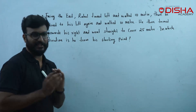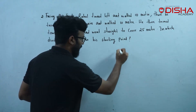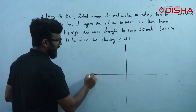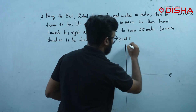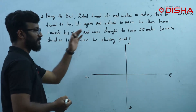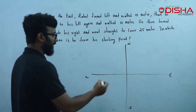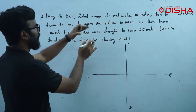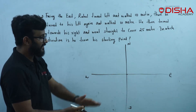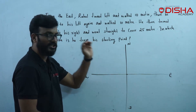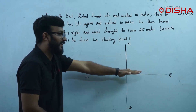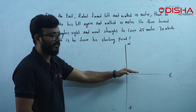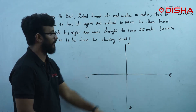If we do a rough structure, we will mark VNS. Facing east — we are facing east. Rahul turned left and walked 10 meters. When facing east, if we turn left, that is north — about 10 meters. Then he turned to his left again, moving forward. We are facing a certain distance, and we have the diagram of this.